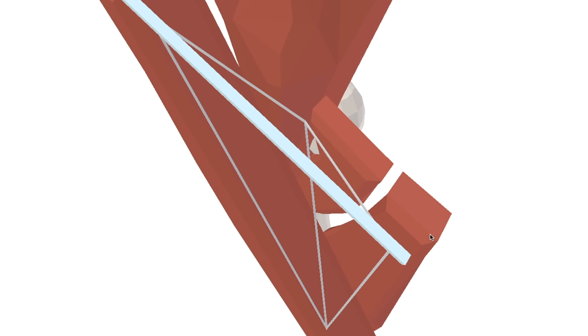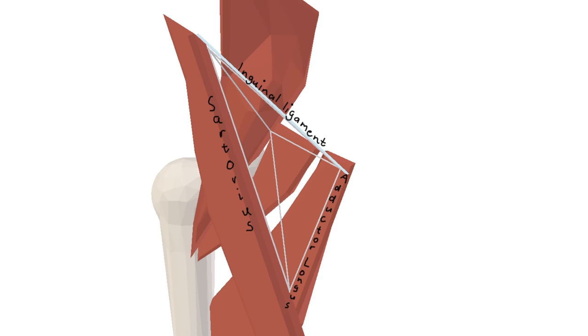The floor of the femoral triangle is made up by the body of adductor longus, the body of pectoneus, and a little bit of iliopsoas as well. Again, the floor is made up by adductor longus, pectoneus and iliopsoas.